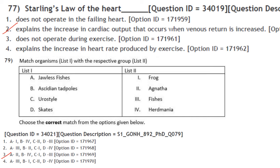Match organism with respective group: Jawless fish — Agnatha; Ascidian tadpole — Herdimania (Urochordata); Eurostyle — Echinodermata; Frog — Amphibia; Skates — Chondrichthyes (Pisces). Answer is option 3: A2, B4, C1, D3.